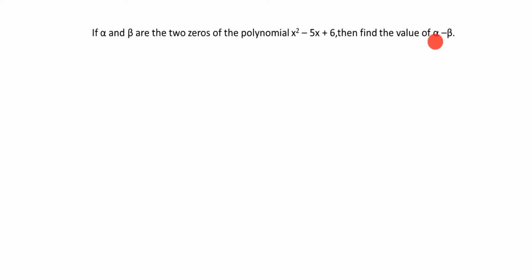We need to calculate alpha minus beta. What is given in this question? x squared minus 5x plus 6. This is ax squared plus bx plus c. What is the value of a in this case? It is 1 — it is not given explicitly, so you have to take it as 1. b is equal to minus 5, and c is equal to 6. You see this is plus bx, but here it is minus, so you have to take minus 5.